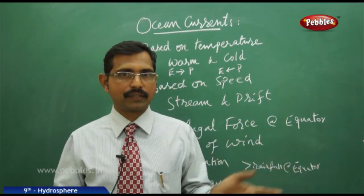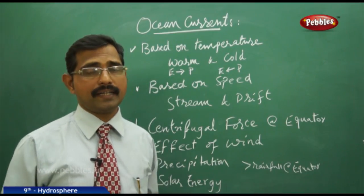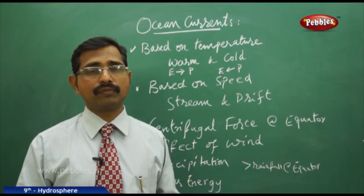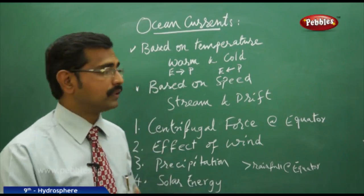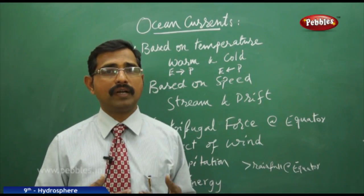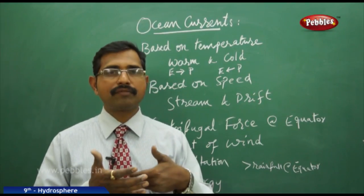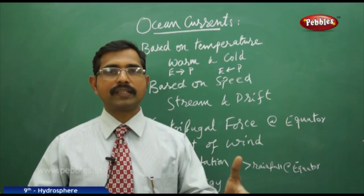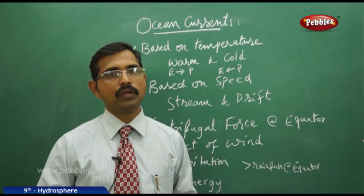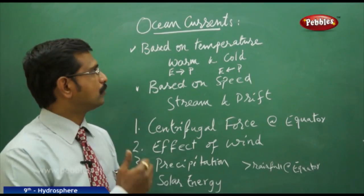Apart from these, salinity and density of water also affect the current flow and speed. Melting of ice — thawing — in polar regions also affects ocean currents. When ice melts and the volume of water increases, the speed of the current increases as well.